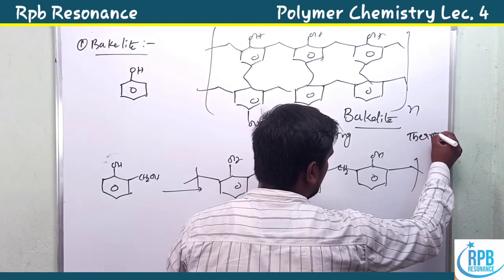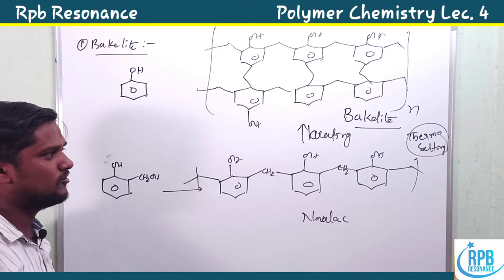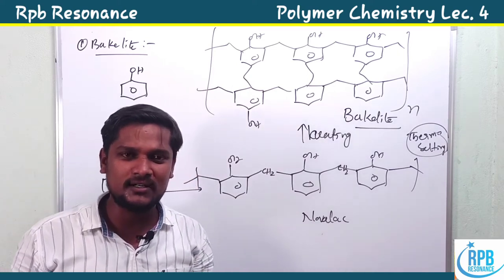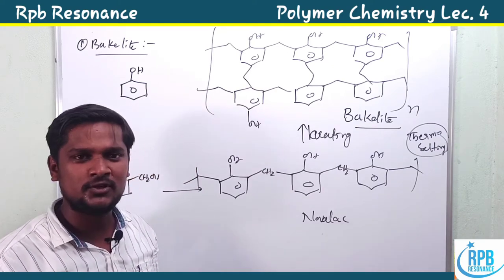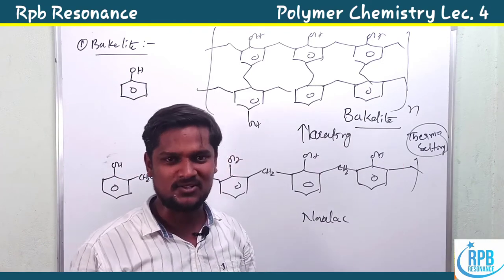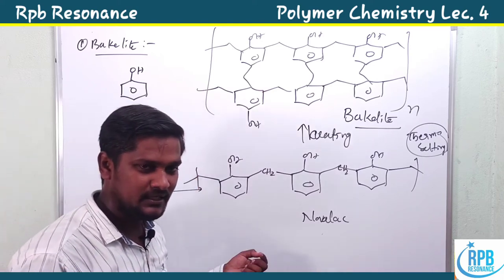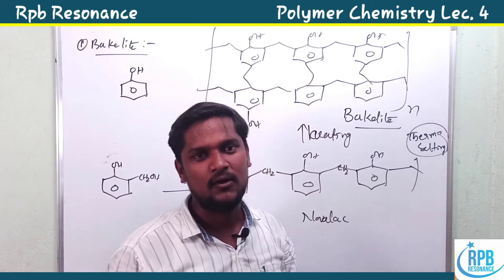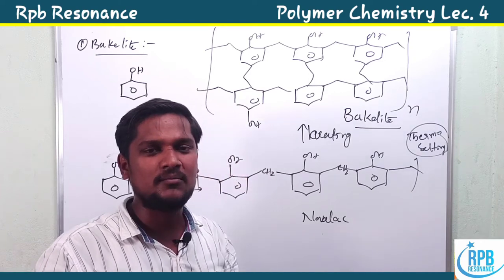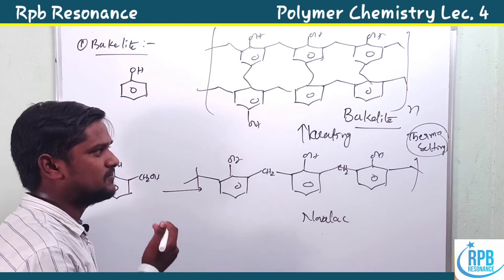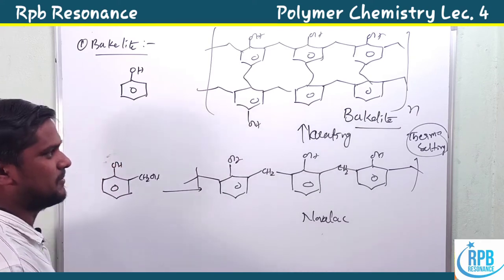Formaldehyde resin is a thermosetting polymer because it has more cross-linking structure. To summarize: phenol treated with formaldehyde in either acidic or basic medium gives three different products — ortho-substituted, ortho-para substituted, and di-ortho-para substituted. One of these undergoes polymerization to give a linear chain called novolac. On heating novolac, it forms cross-links, producing a solid substance called bakelite.